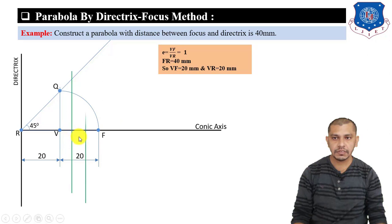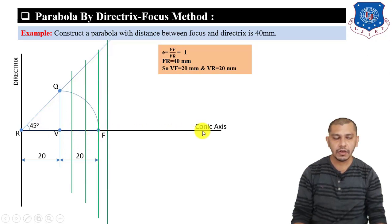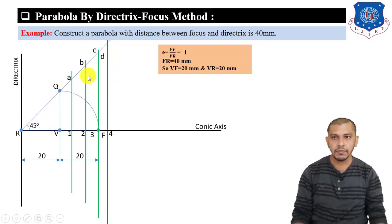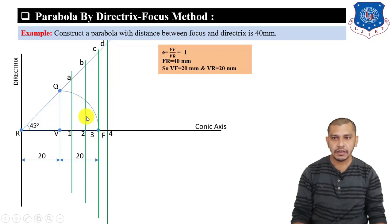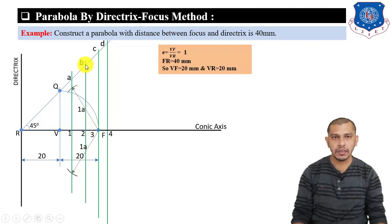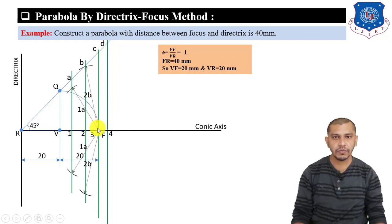Draw a perpendicular to the conic axis from the vertex, measure VF on the compass, and from V as center give an arc to get point Q. Connect Q to R — the angle of line RQ will be exactly 45 degrees for the parabola. Then make divisions from V in the direction of the focus — mark 1, 2, 3, 4 — and draw perpendicular lines from each division to get intersection points A, B, C, D on line RQ.